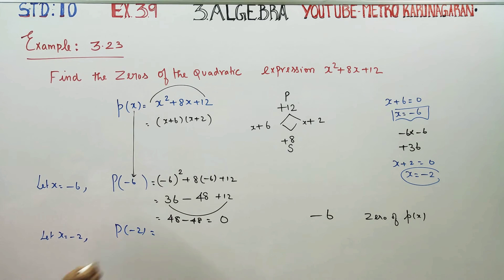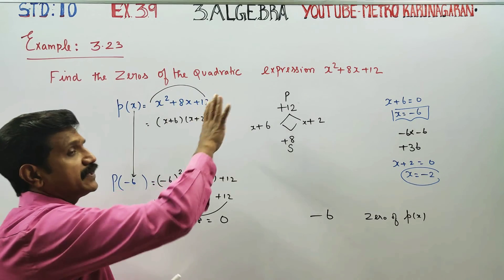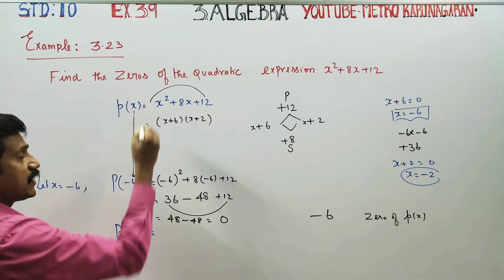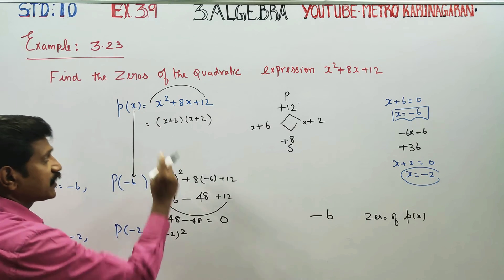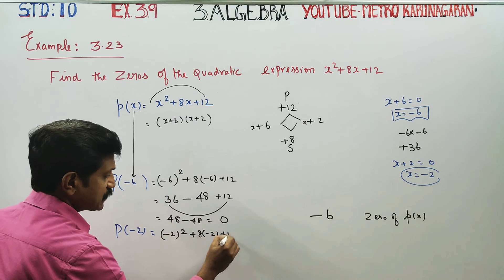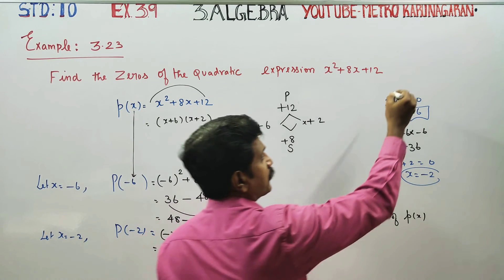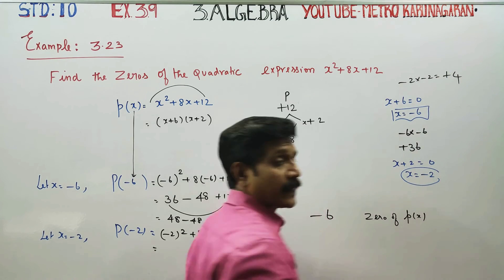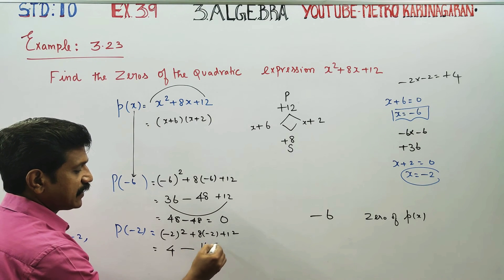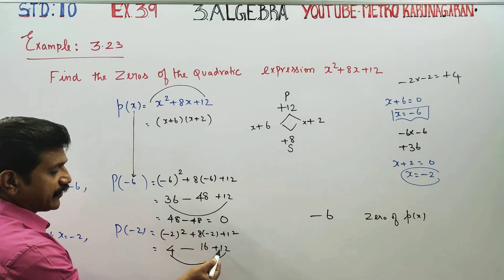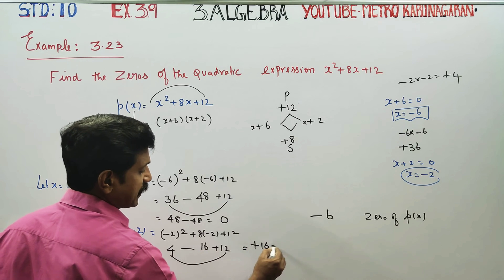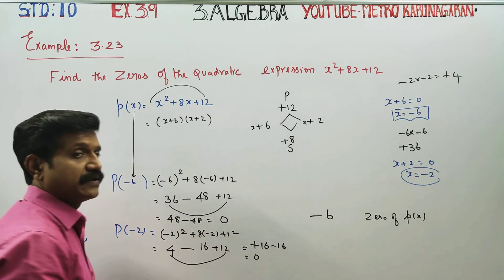Then, P of minus 2 — we have to try and find it. Minus 2 to go, this sum is 0. Check and find: x to be minus 2. Eta base is minus 2, plus 8 into minus 2, plus 12. Minus 2 into minus 2 is plus 4; minus 8 into 2 is minus 16; plus 12. So: 4 minus 16 plus 12.